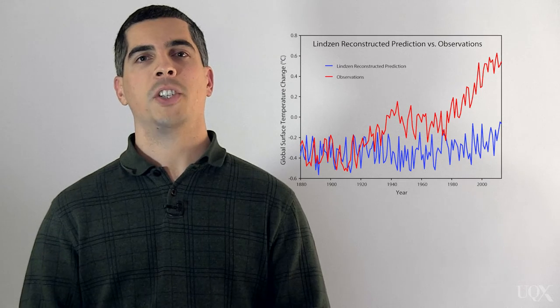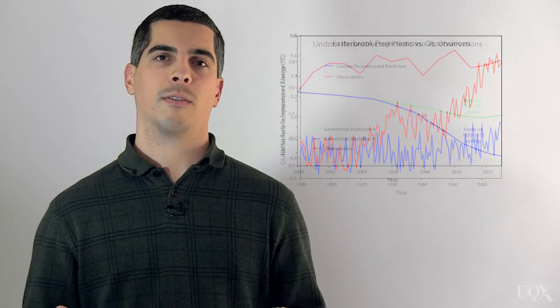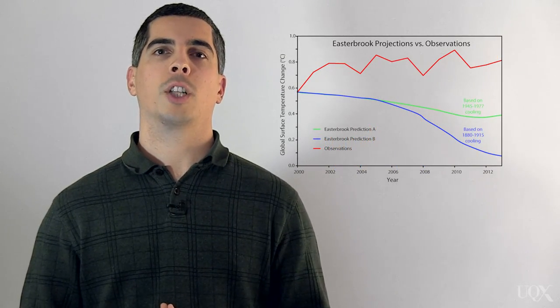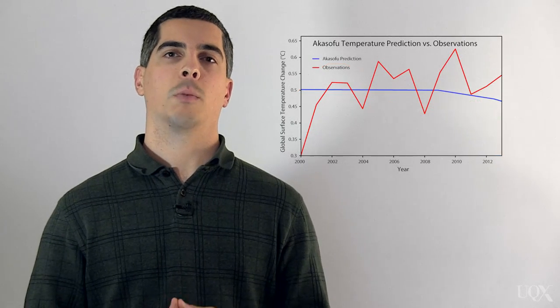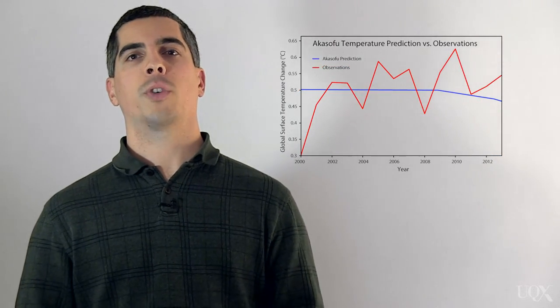Like all models, global climate models are imperfect, but they've made some very accurate predictions for decades. On the other hand, predictions made by climate contrarians have been way off. They've mostly predicted global cooling while we've actually experienced global warming. That's a poor track record, not nearly as accurate as predictions made by climate models.